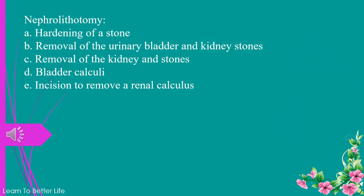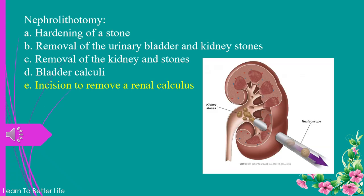Nephrolithotomy. a. hardening of a stone. b. removal of the urinary bladder and kidney stones. c. removal of the kidney and stones. d. bladder calculi. e. incision to remove a renal calculus. The answer is e. incision to remove a renal calculus.